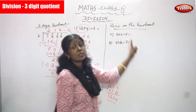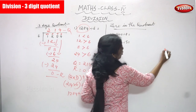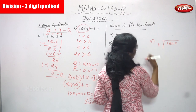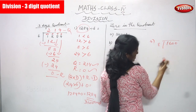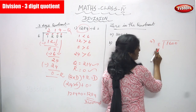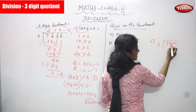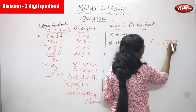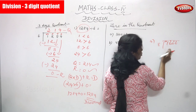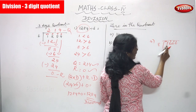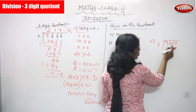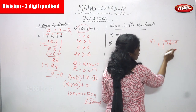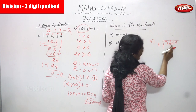Now the next problem: 1600 divided by 8. Compare 1 and 8: 1 is less than 8, so go to the next digit. Combine 1 and 6 to get 16. Write the place values: thousands, hundreds, tens, ones. Start with thousands — can't divide because 1 is less than 8, so go to the hundreds place value, which is 6, giving 16.